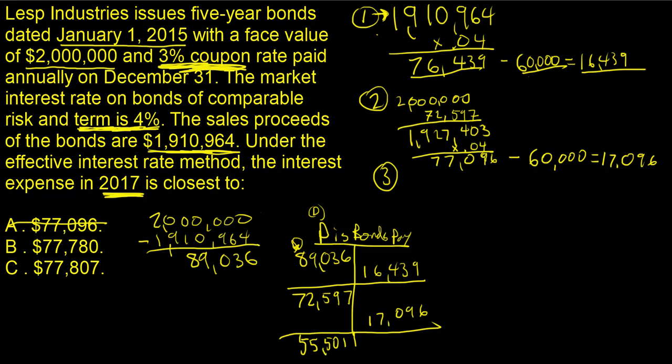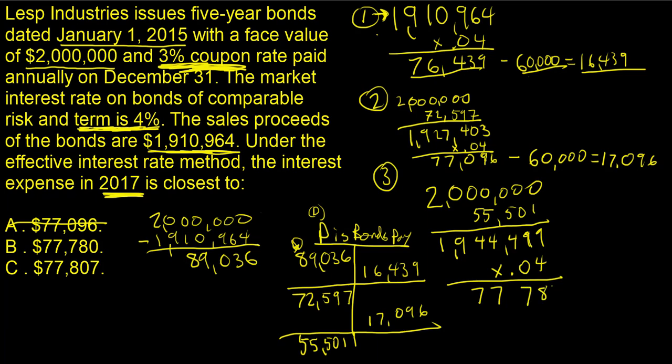We're going to use that $55,501 for our third payment, which is going to be $2,000,000. Net the balance of our discount on bonds payable, which is $55,501. We take the net of those two. The carrying value on this is going to be $1,944,499. So $1,944,499. That's the carrying amount. We have to take that times our market rate of interest. And if we take that times the market rate of interest, we're going to get an amount of $77,780. $77,780. And guess what? That's the answer B.